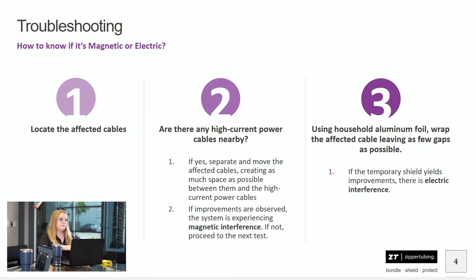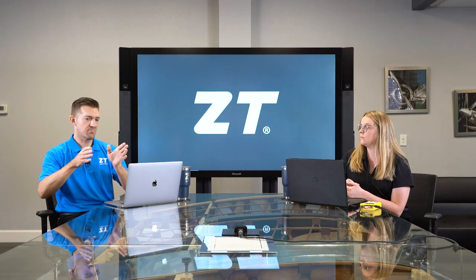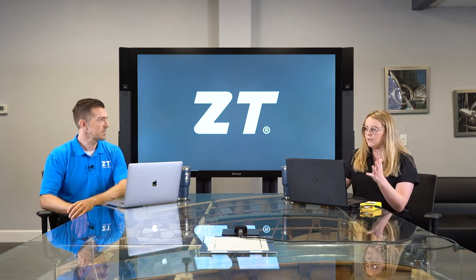Now that we know the two types, how do you know what you have in your system? We've got a few simple steps to take. First, locate those affected cables — figure out what's giving you interference, usually a signal cable. Once you've identified that cable or component, determine if there's any high current power sources nearby. If there is, separate your affected cable from that power source. Even a foot or two of distance is going to knock down that interference if it's magnetic. If cables do have to cross, cross them at 90 degrees to cancel out the field. If you're seeing improvements, it's likely magnetic interference.